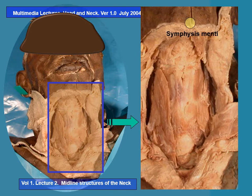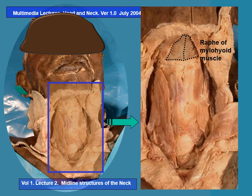The first structure is the symphysis menti. Immediately beneath it is the raphe of the mylohyoid muscle, that is, in the floor of the submental triangle. There are two muscles, one on either side — the mylohyoid — joined in the midline. This raphe is a midline structure right below the symphysis menti.